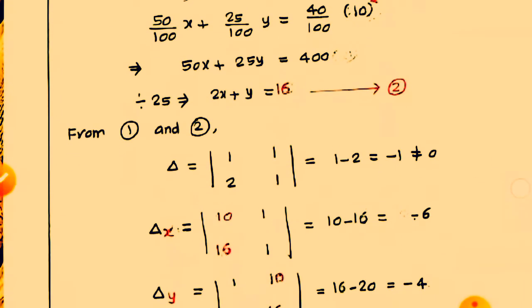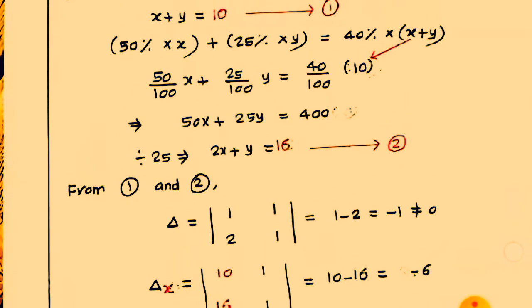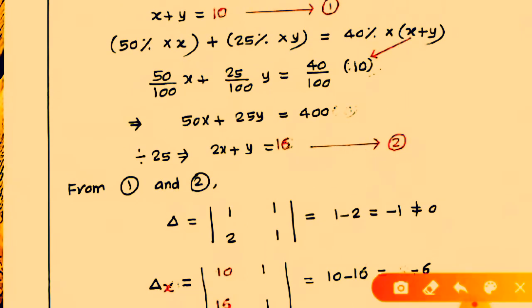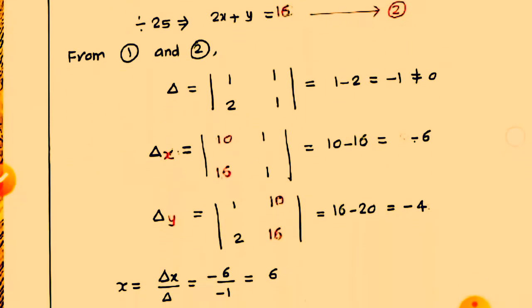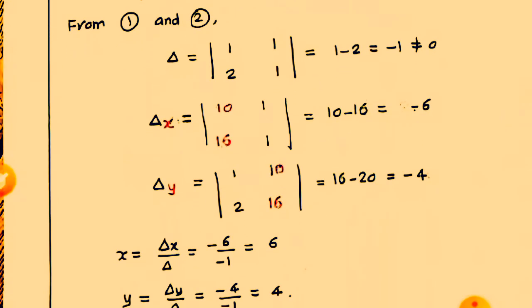Next, delta X. For delta X, we remove the X values and replace with the constant values. That equals the determinant with 10, 1, 16, 1. So 10 into 1 equals 10, minus 16 into 1. So that is 10 minus 16, which equals minus 6.